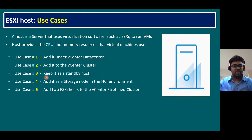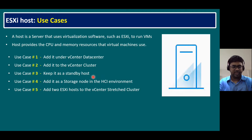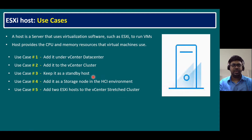Use case three: in real-time infrastructure, we can keep an ESXi host as a standby host. We add it to vCenter Server but keep it on standby. The reason is: whenever there is a resource crunch in our vCenter Server, we can bring in the standby ESXi host. Another scenario where standby is useful is when an existing ESXi host has unexpected hardware-related issues.